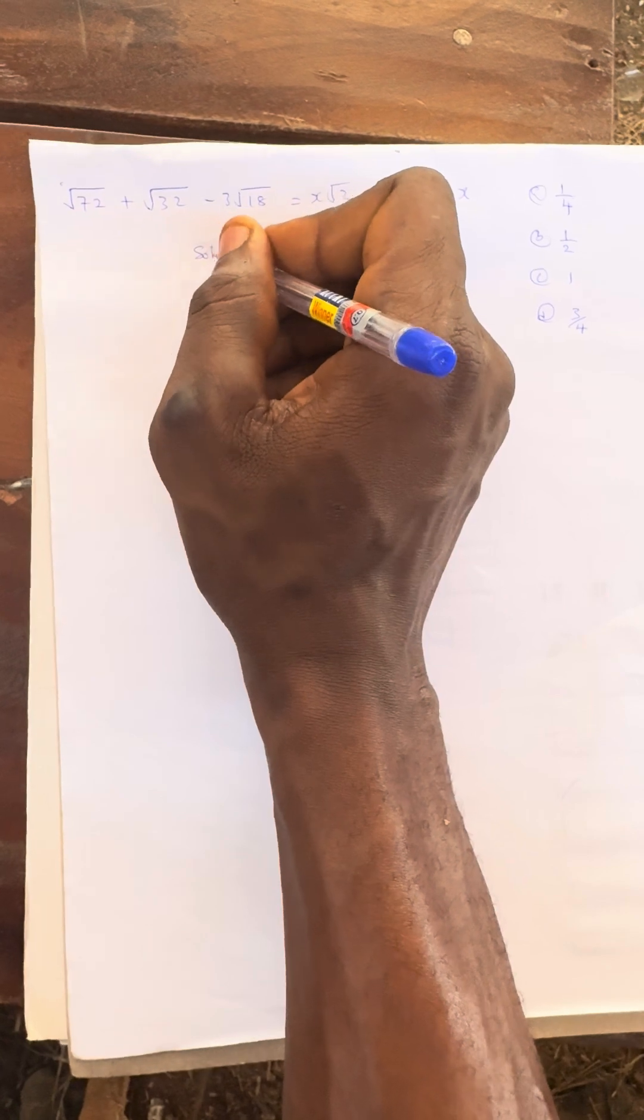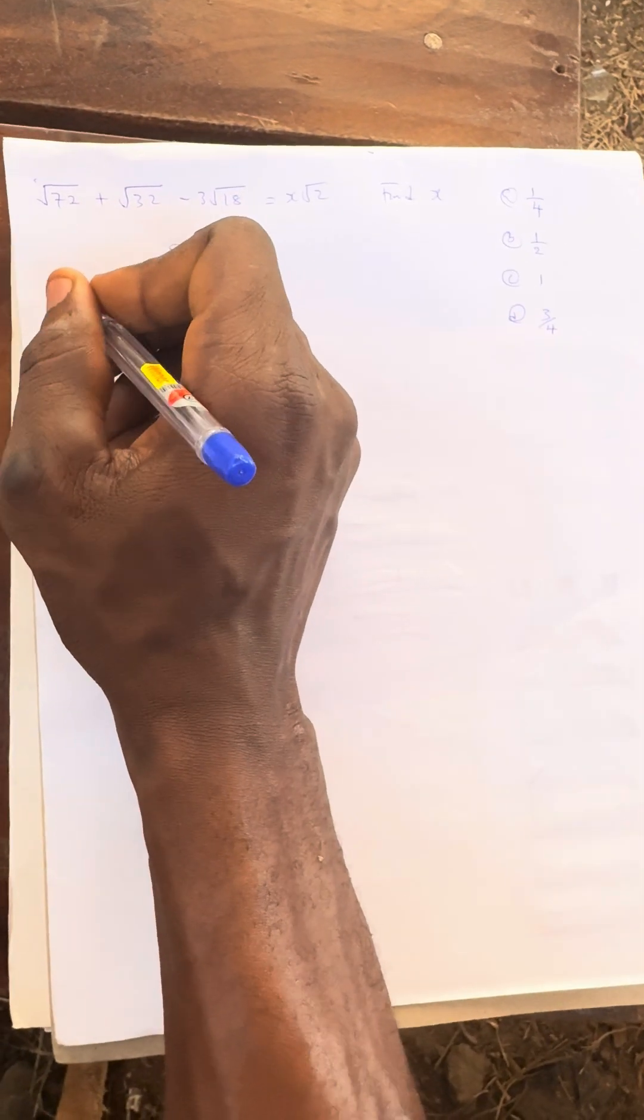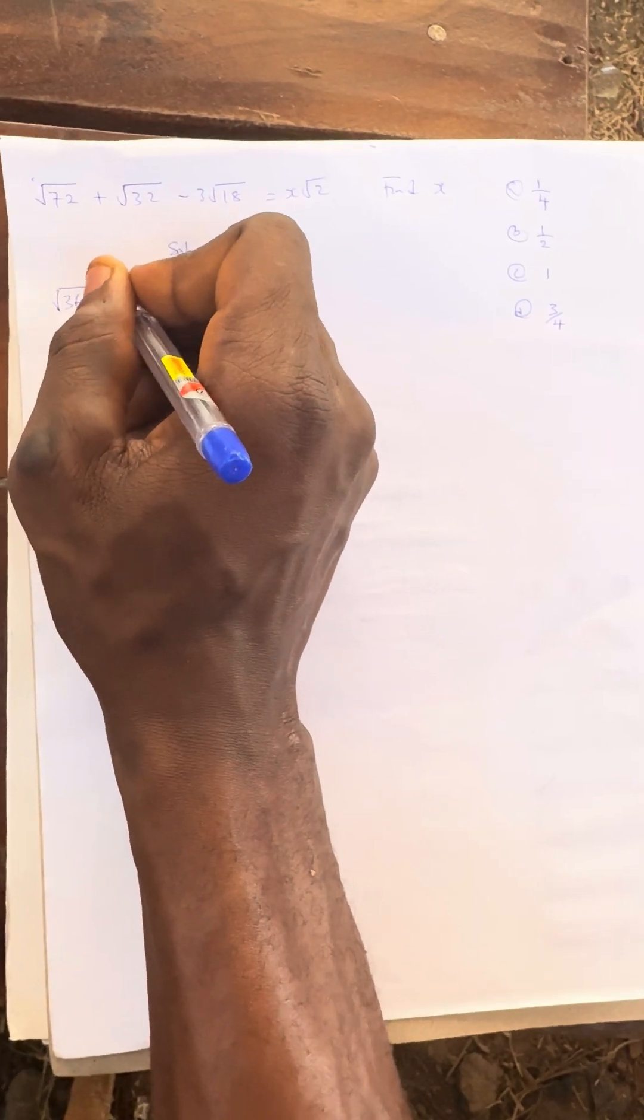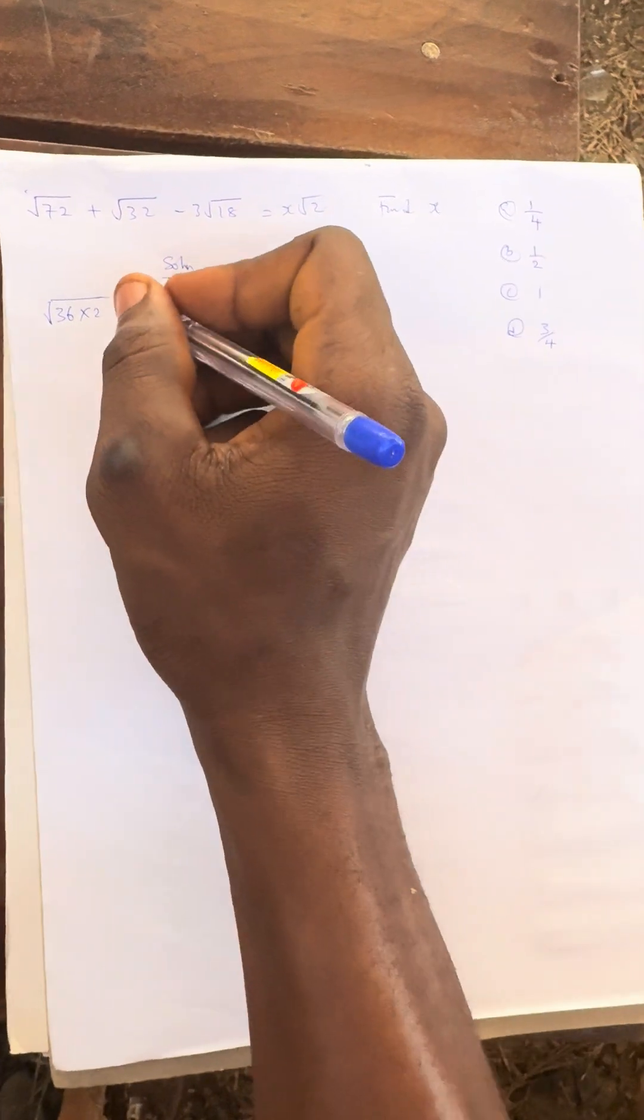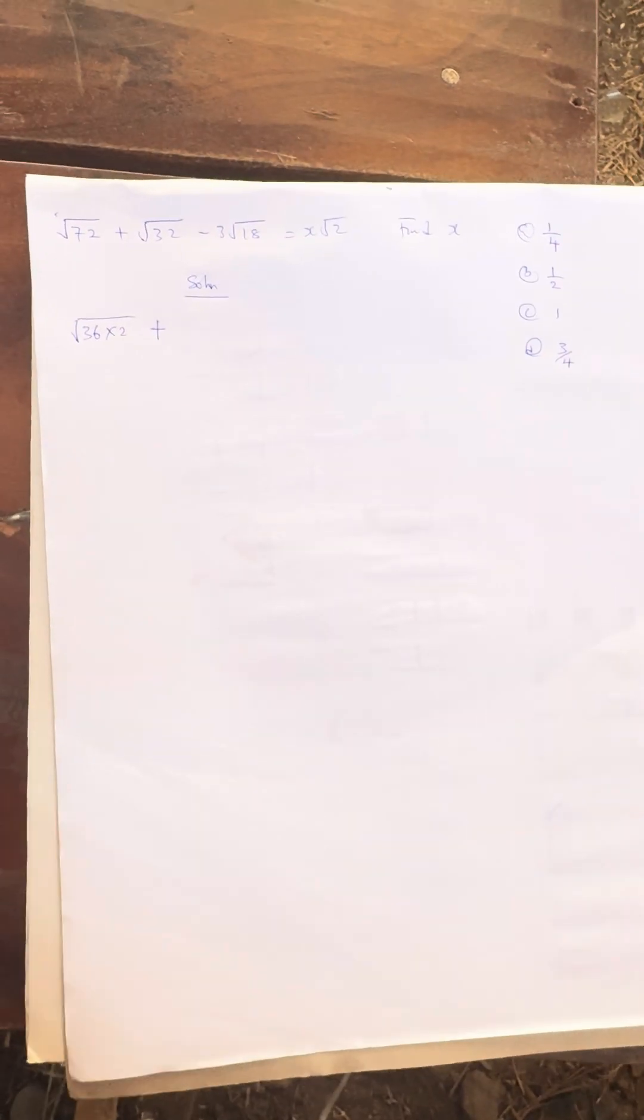How are we going to solve this solution? √72, don't forget that √72 can be broken down to √(36 × 2).